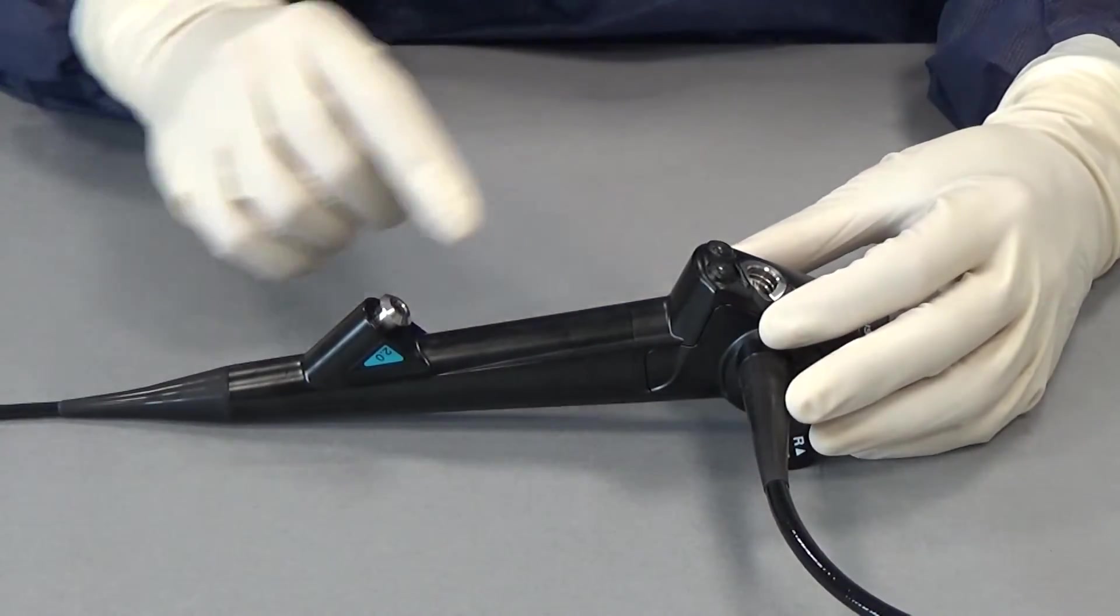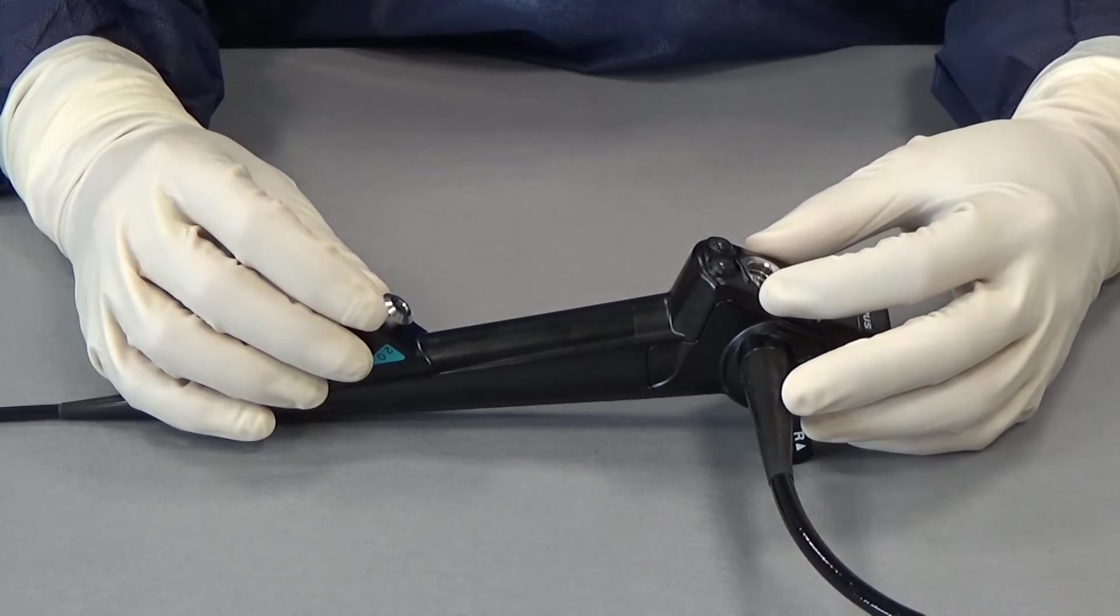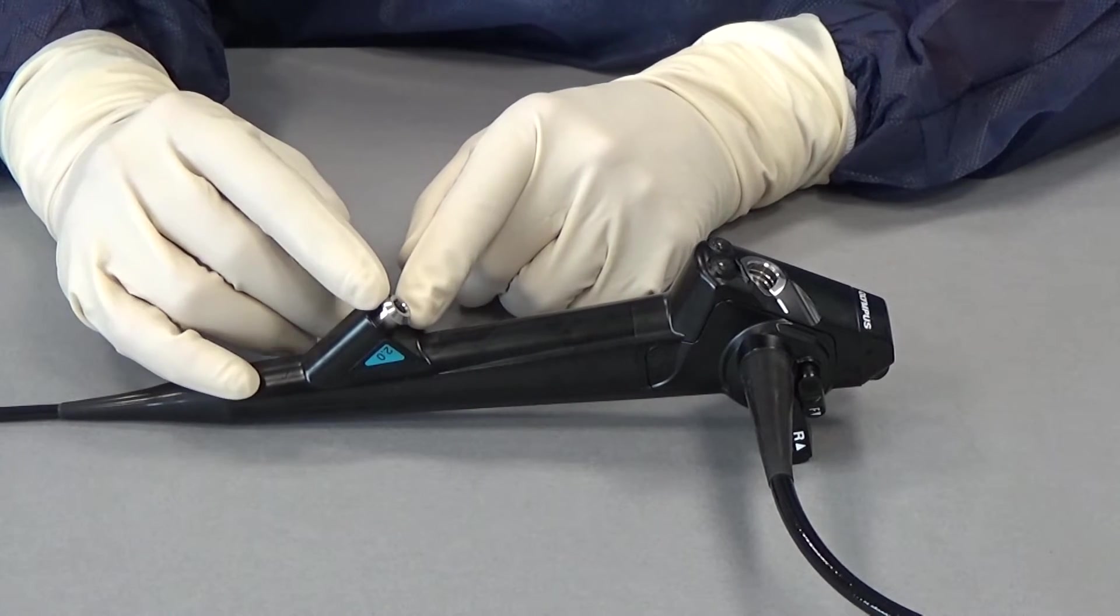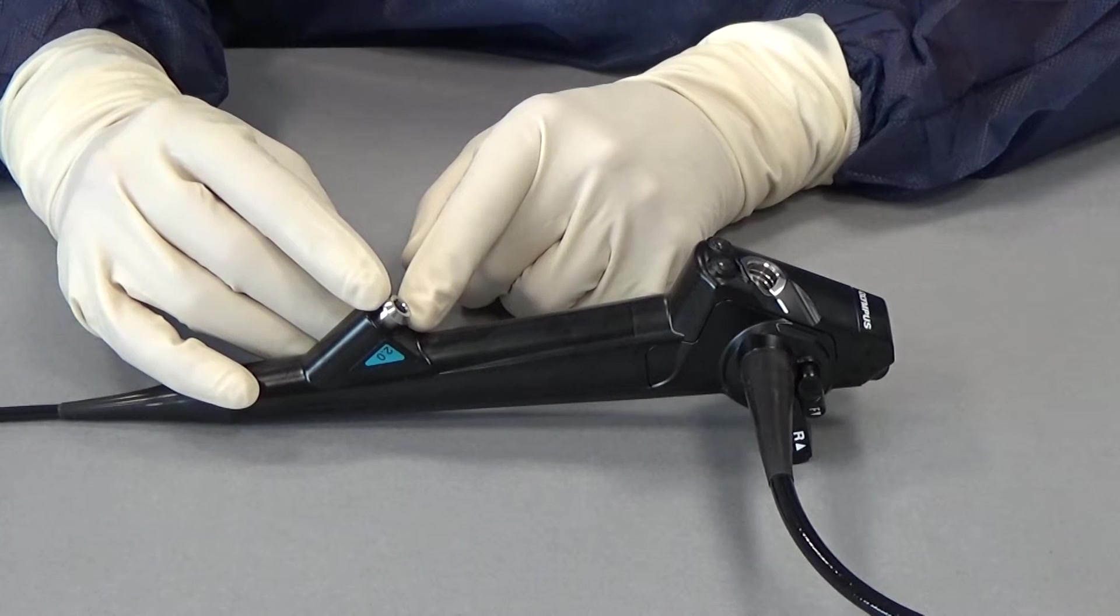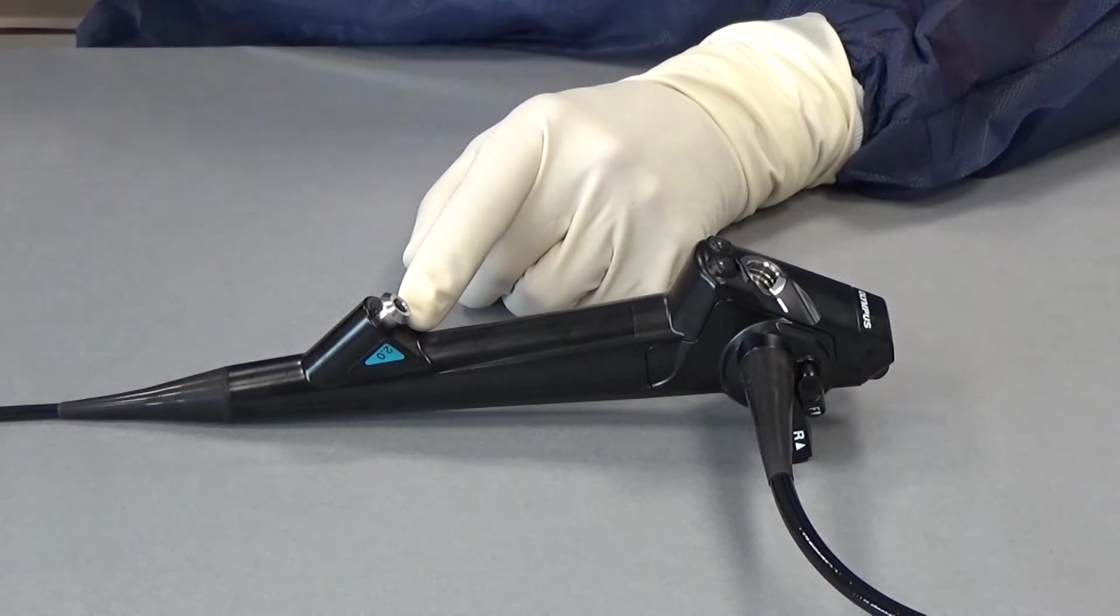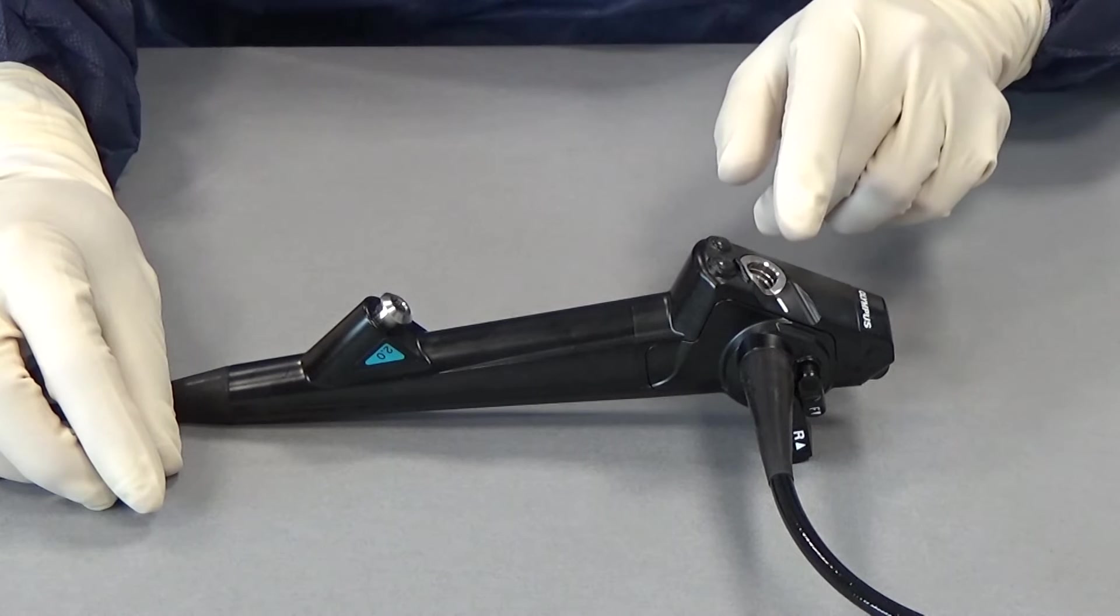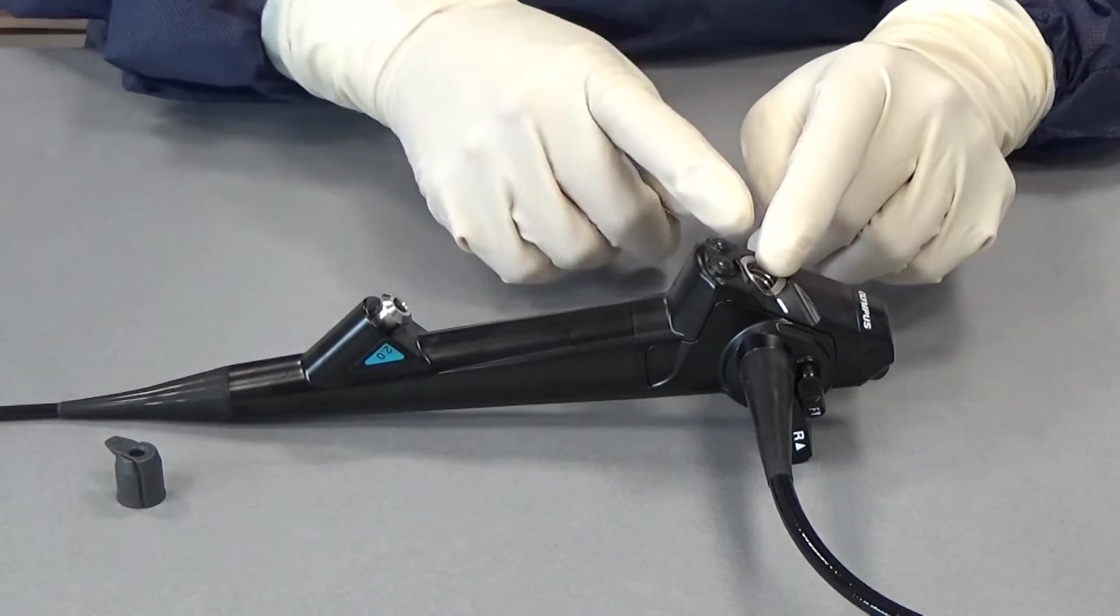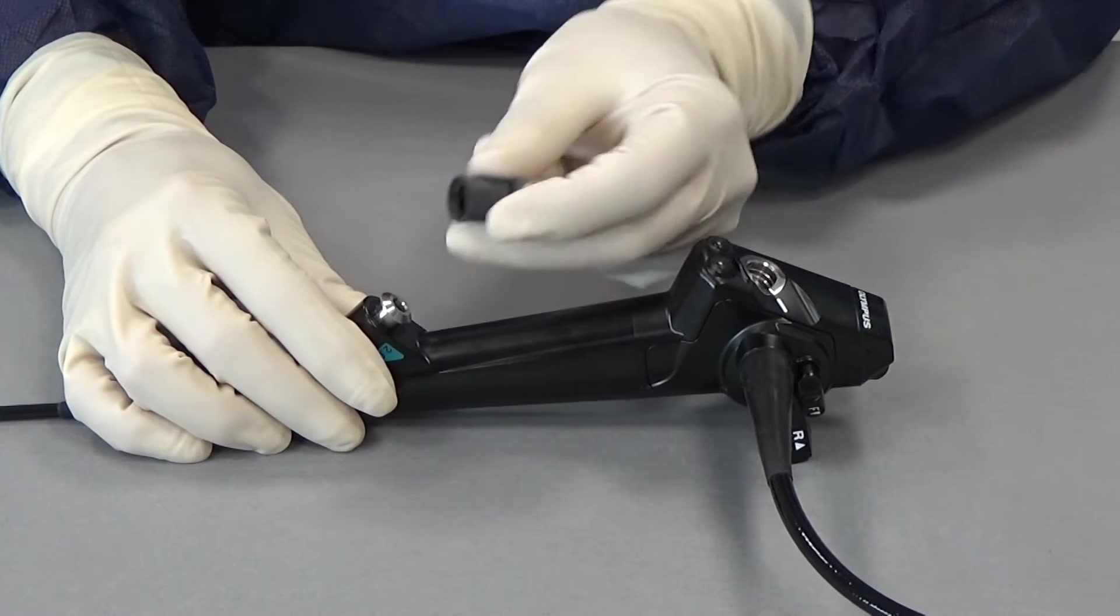If you have these two channels the question arises which channel is used for what. Now this channel here, the lower one, is used for instruments like biopsy forceps or glass fibers for lasers or it's used for injections. We need an airtight seal here because if we want to in parallel suction air or secretions out of this inlet, then the air will be sucked out of here. That means we have to seal this one with a snap-on device.